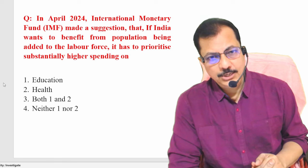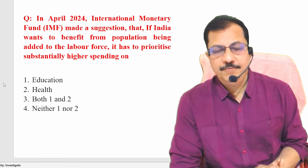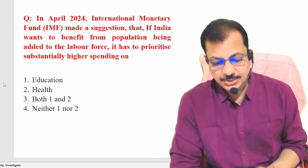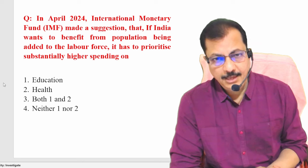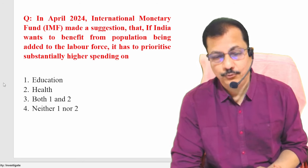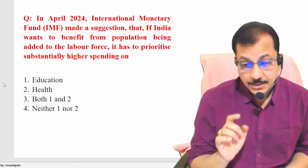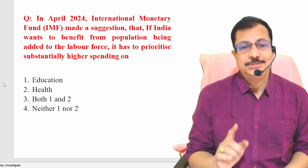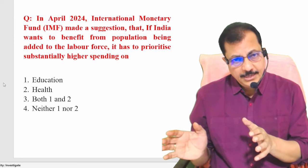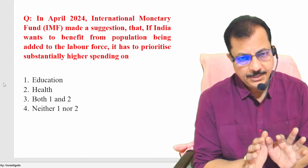In April 2024, the IMF — International Monetary Fund — made a suggestion: if India wants to benefit from the population being added to the labor force, which is related to demographic dividend, it has to prioritize substantially higher spending. India is adding more population to its working force.